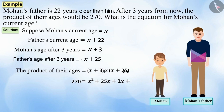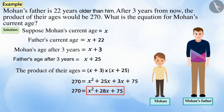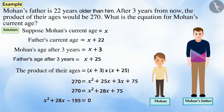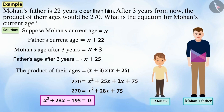Upon solving it, 270 equals x² plus 28x plus 75. We see that on the right-hand side we have a quadratic polynomial and on the left-hand side we have a constant. Writing the obtained quadratic equation in standard form, we get x² plus 28x minus 195 equals 0. Therefore, Mohan's present age satisfies the equation x² + 28x − 195 = 0.